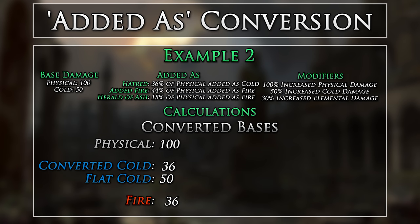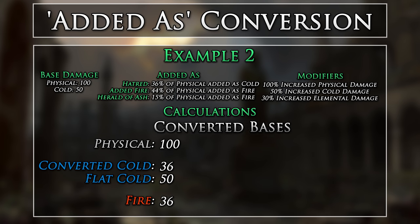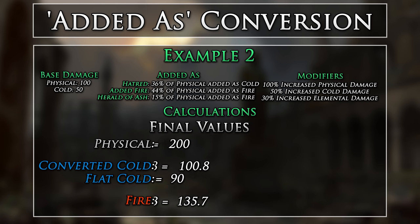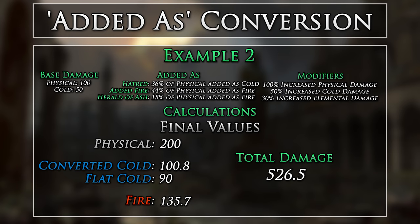Now that we have the new base damages, we can apply modifiers to them. Recall that we can only apply modifiers to damage types of which they were and now are. So this means that our converted cold and flat cold will have different modifiers applied to them. For our converted cold, we are applying physical, cold, and elemental modifiers to it. For our flat cold, we can only apply what it is — meaning we can only apply cold damage and elemental damage modifiers to it. Now after we have applied all of our modifiers, we can now add up all of the final values for our final total.